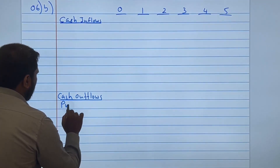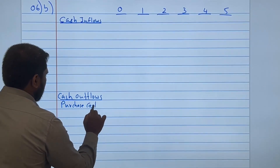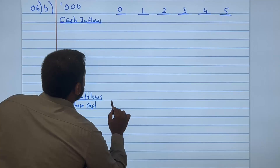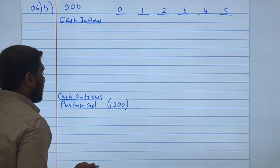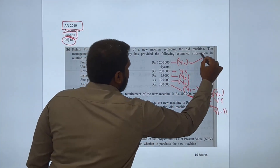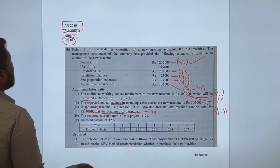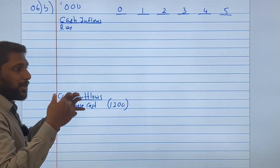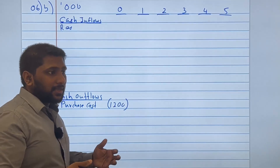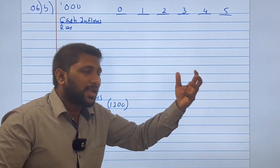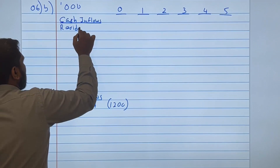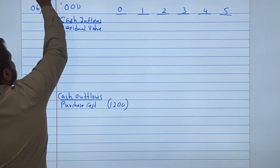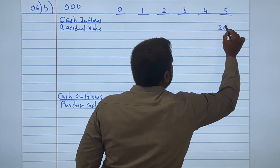Under cash outflows, the purchase cost is 1.2 million — that's 1,200 in thousands — a year 0 outflow. The residual value is 200,000 — a cash inflow in year 5, since we sell the asset after using it for 5 years. Residual value is also called scrap value or salvage value.